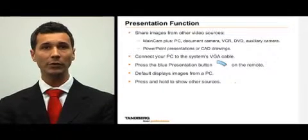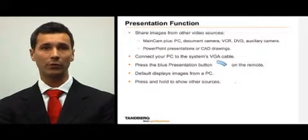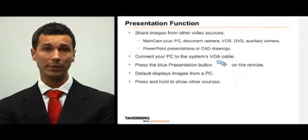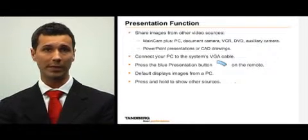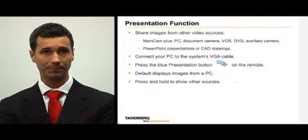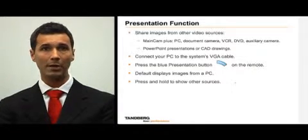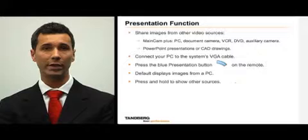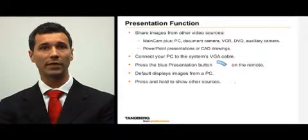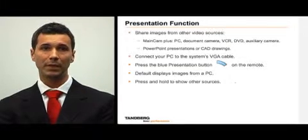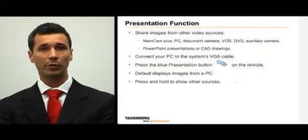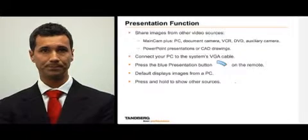If you wish to show a different video source, for example a document camera, simply press and hold the presentation button. A menu will appear on the screen so you can select the desired video source. In this case, you would choose the document camera.